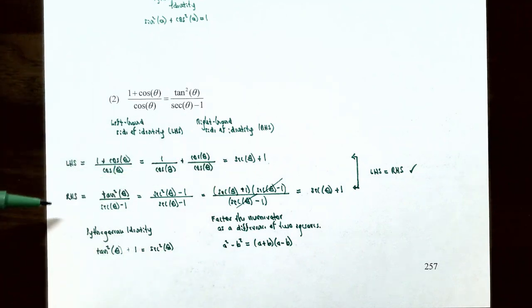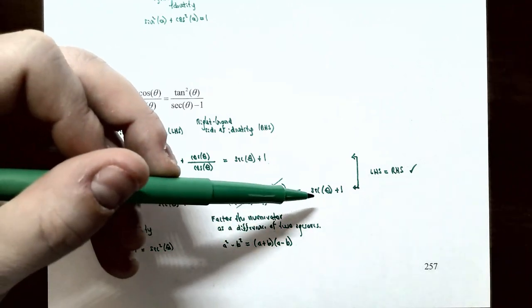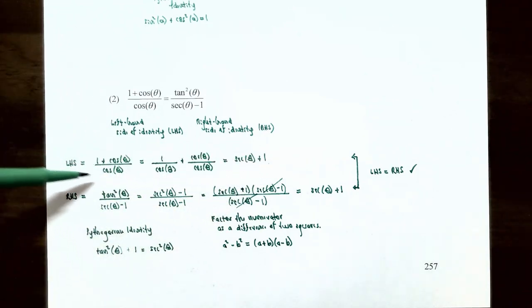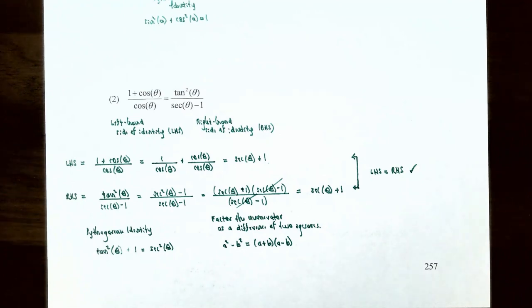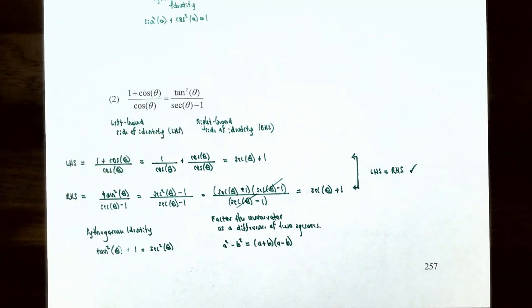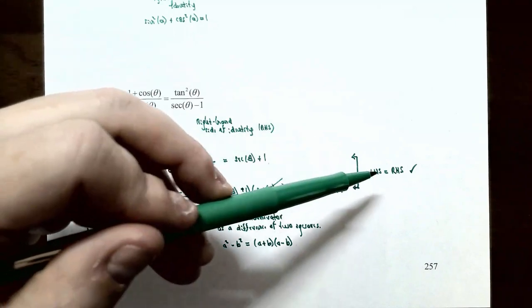Starting with the RHS we arrive at sec θ + 1, and the LHS also simplified to sec θ + 1. You can start with one side of a trigonometric identity, stop, and then start with the other side, eventually arriving at the same expression — that does establish or prove the trigonometric identity. The left-hand side equals the right-hand side.